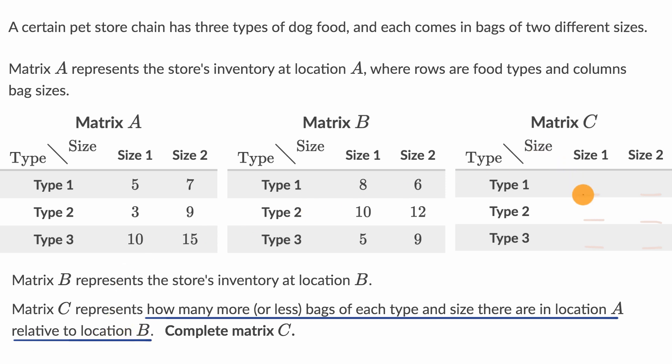So for example, this first entry right over here, we want to know how many more bags of type one, size one, there are in location A than there are in location B. I would take the number that there are in location A, and then from that subtract how many there are in location B. That would tell me how many more I have in location A.